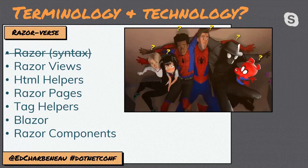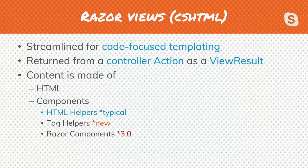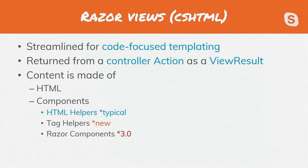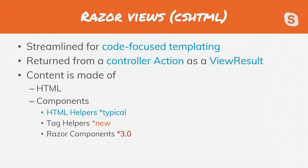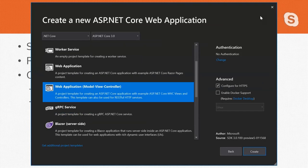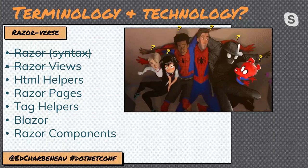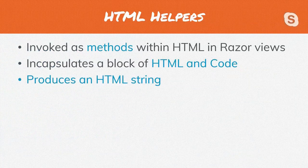That's a quick overview of Razor syntax. Now let's jump into Razor views and HTML helpers. Razor views are a streamlined way of writing code-focused templates in .NET. They're returned from a controller action as a view result, and the content is generally made up of HTML and components that are HTML helpers. Other component models are valid here like tag helpers and Razor components, but typically with views you'll find HTML helpers being used. This project template comes from the MVC web application template.